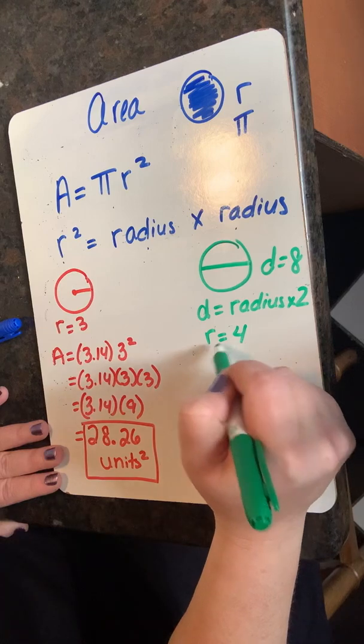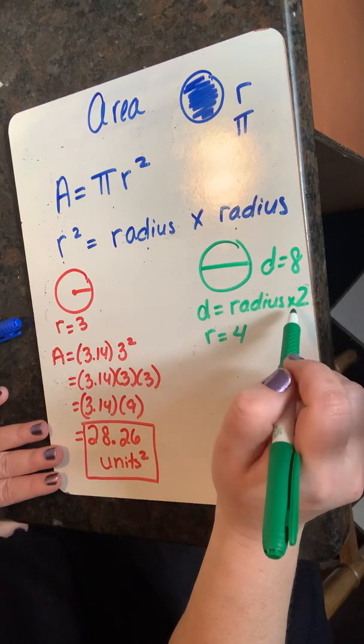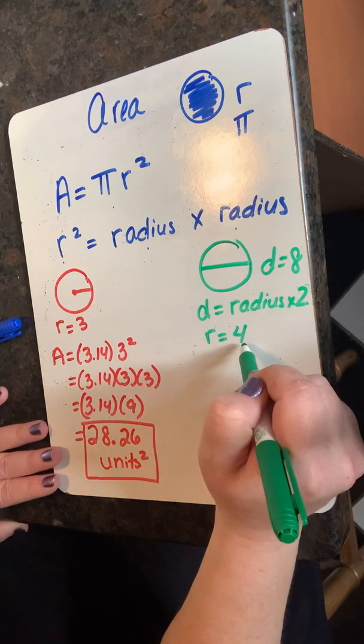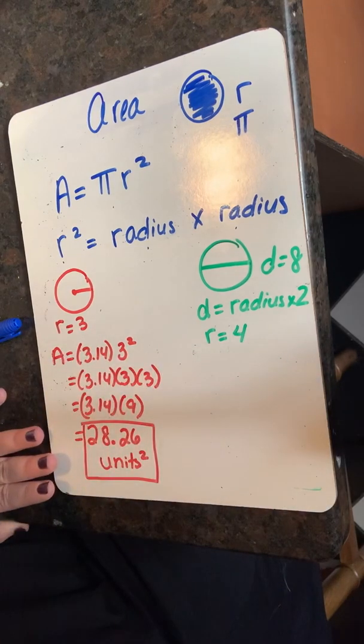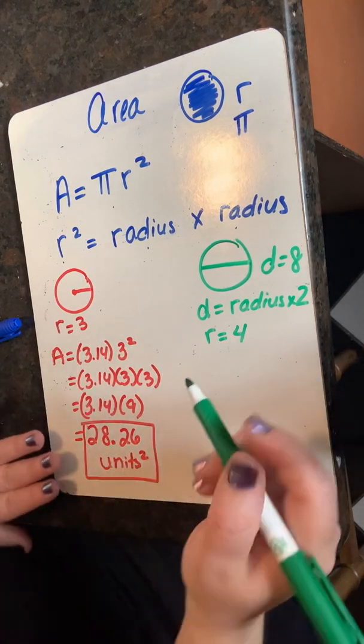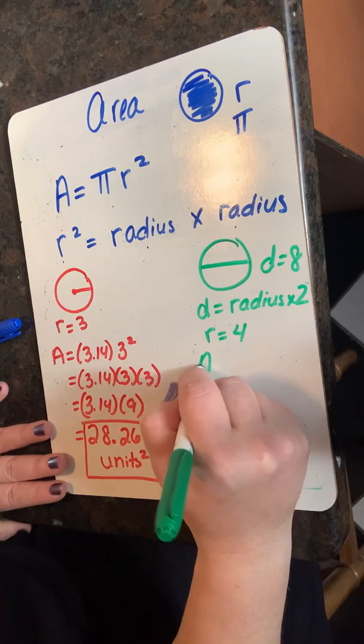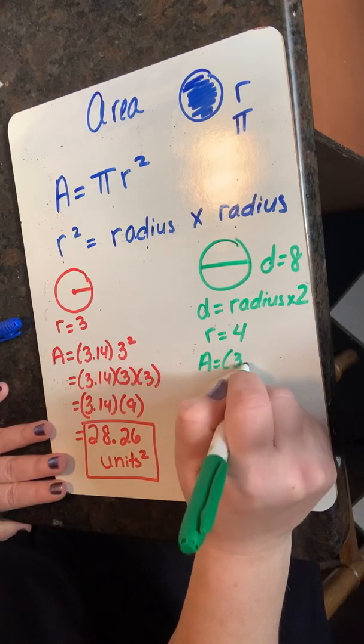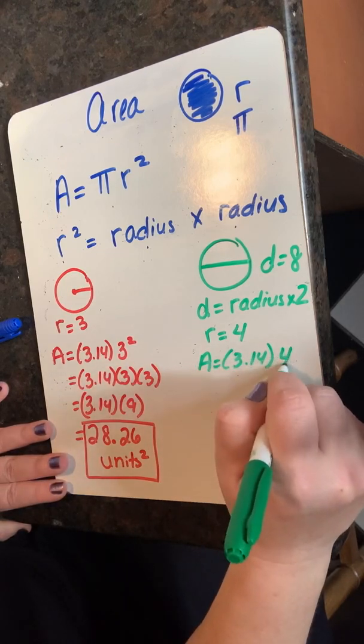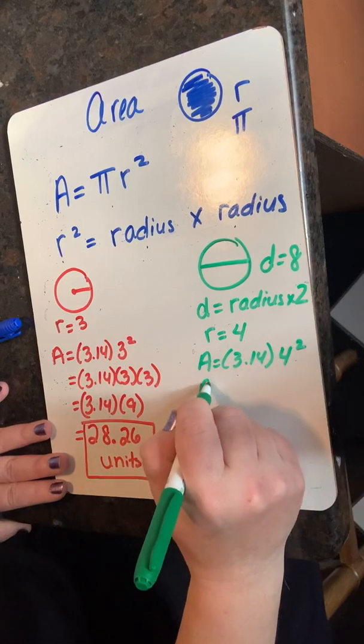Entonces, puedo encontrar el radio dividiendo ocho entre dos. El radio es igual a cuatro. Reescribo mi ecuación conectando mis valores.